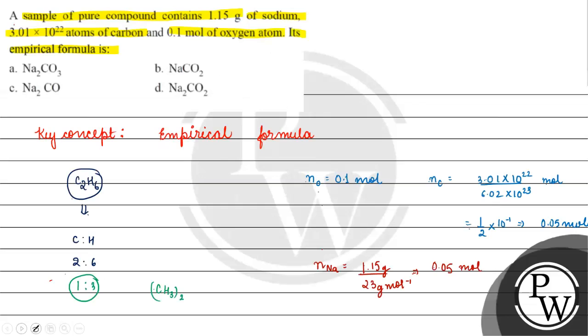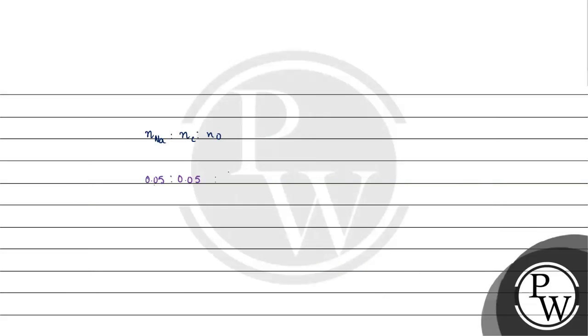Now we'll take the molar ratio. Sodium is to number of moles of carbon is to number of moles of oxygen. We have number of moles of sodium as 0.05, number of moles of carbon as 0.05, and number of moles of oxygen is 0.1. When we see the simplest ratio, it comes out to be 1 is to 1 is to 2. So we get the formula NaCO2.